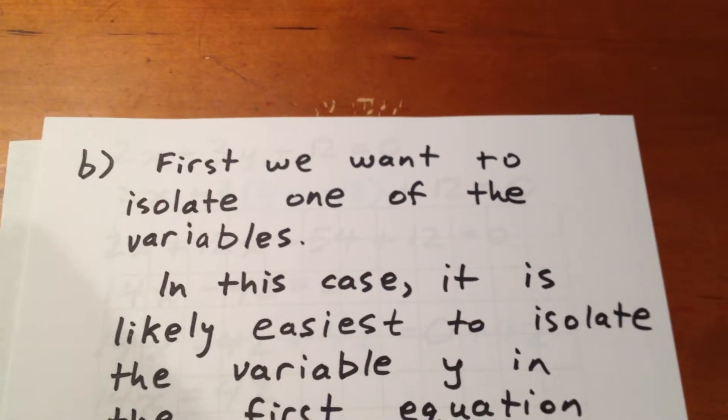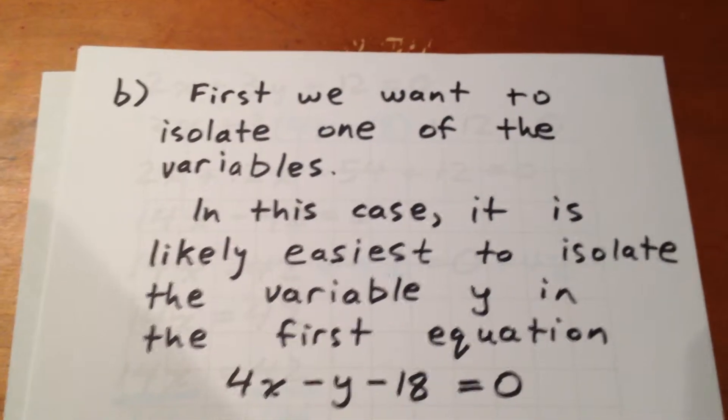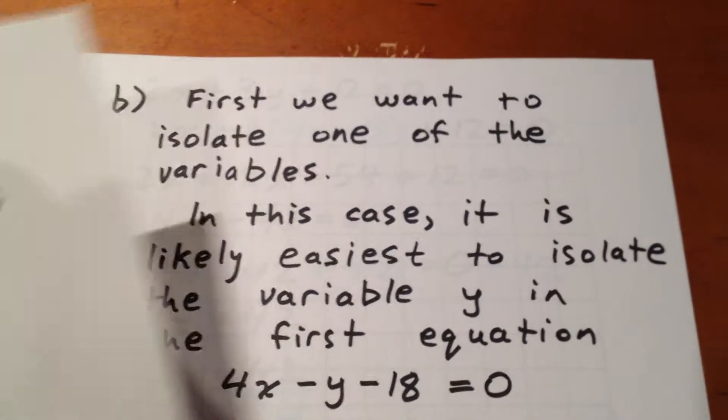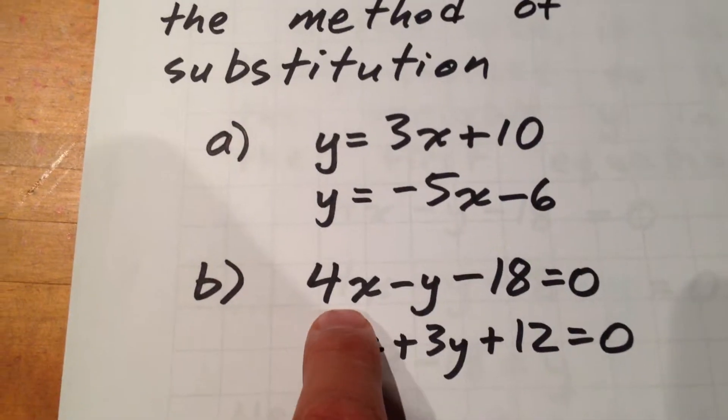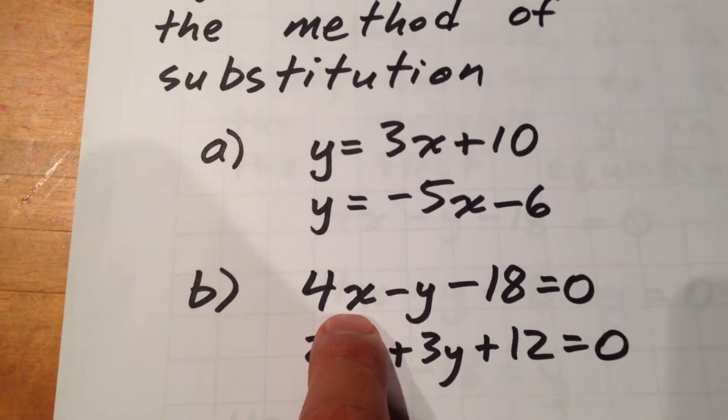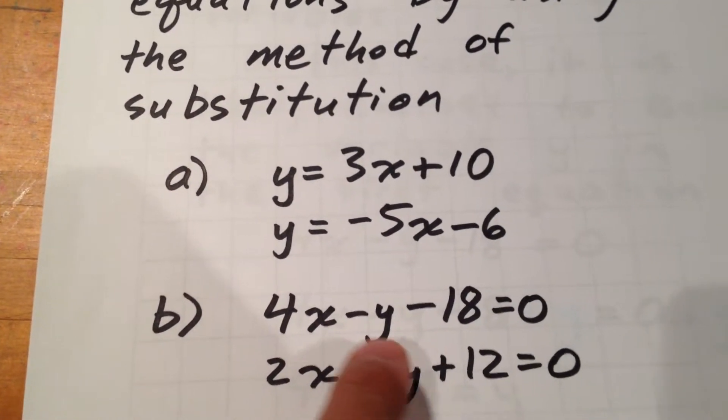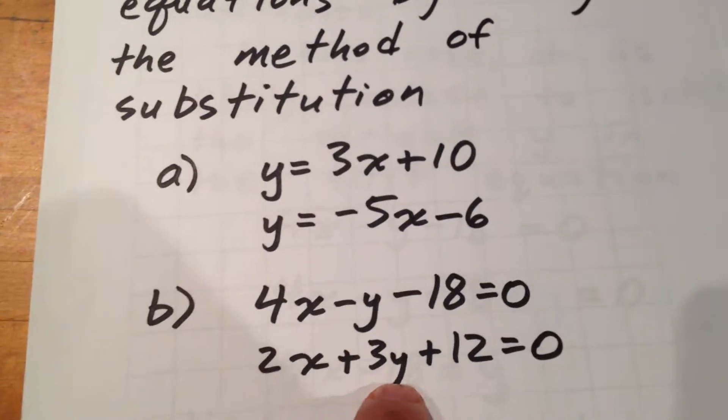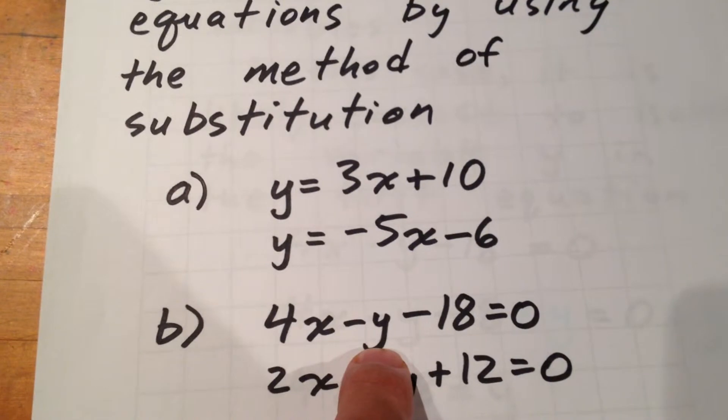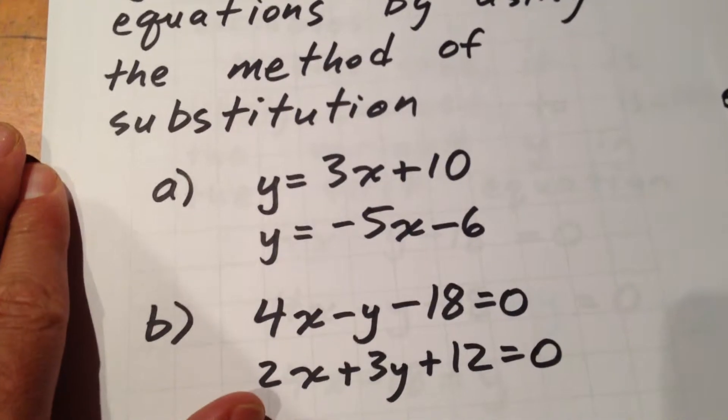Well the first thing we want to do is isolate one of the variables. In this case it appears to be easiest to isolate the variable y in the first equation. The reason for that is because I see that the y value is most close to being isolated. We have a 4x, a 2x and a 3y. It appears easiest to isolate this y by simply adding it to both sides.